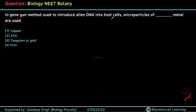Hello students, I have a question here. In the gene gun method used to introduce alien DNA into a host cell, microparticles of heavy metals are used. So, which microparticles are basically used?